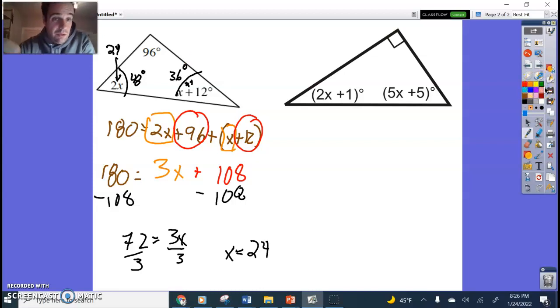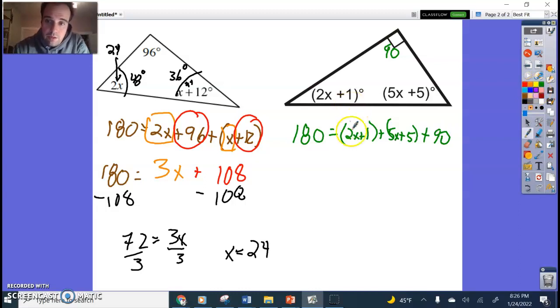Last one. I know Triangle Sum Theorem says my total should be 180. Got three angles. 2X plus 1, 5X plus 5, and this angle over here, which I know from that little box, has to be 90. I'll go ahead and combine like terms. 2X plus 5X is 7X, plus 1 plus 5 plus 90 should be 96. And then 180 stands alone.